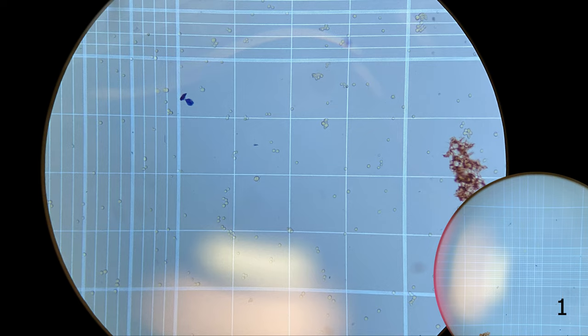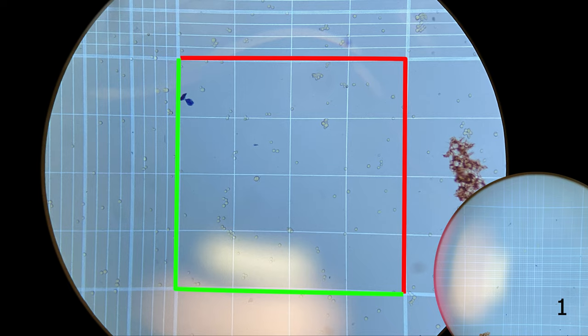One problem you'll have here is that if cells are on the outer edge of your P-square, do you count them or do you not count them? What we do is you pick two sides. In my lab, we do not count cells that are touching the top edge or the right edge. We do count cells that are touching the bottom edge and the left edge. In the end, it doesn't matter as long as you're consistent when counting your cells. So pick two sides. If the cell is touching that edge and it's a side you're not going to count, don't count it. If it's touching the edge that you are going to count, please do count it.